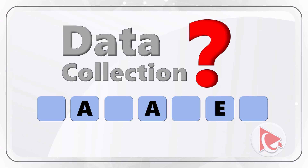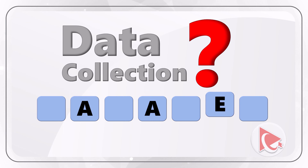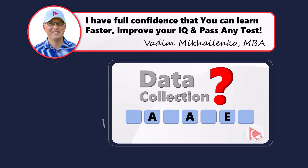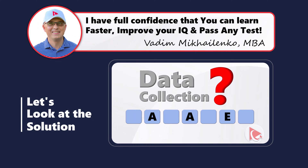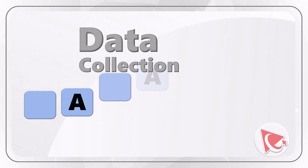The word has 7 letters, and three of those letters are visible: A, A, and E. I'm pretty sure that you've come across this word many, many times. Are you ready? I think I've cracked the puzzle, and I can't wait to share my solution with you. And if you got a different answer, please make sure to share it in comments.